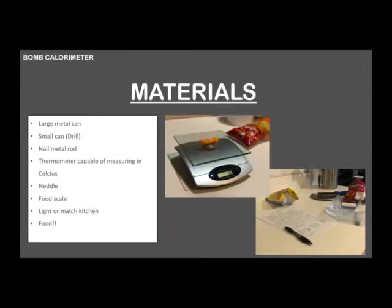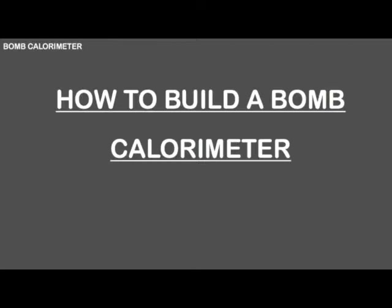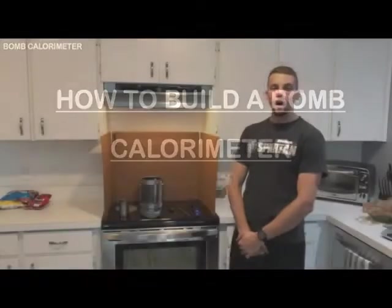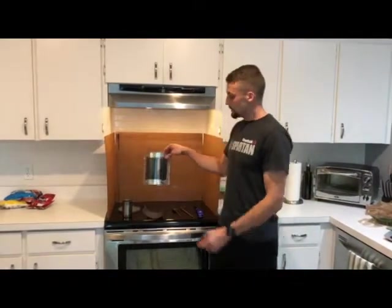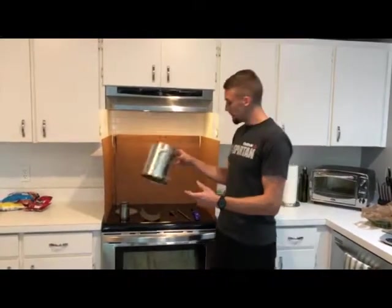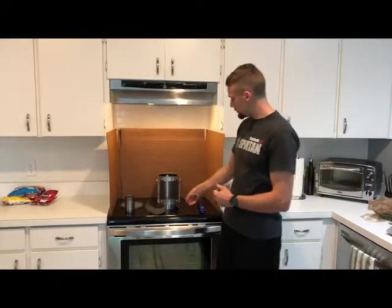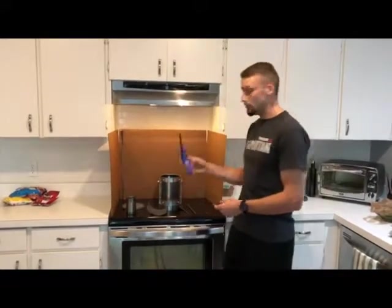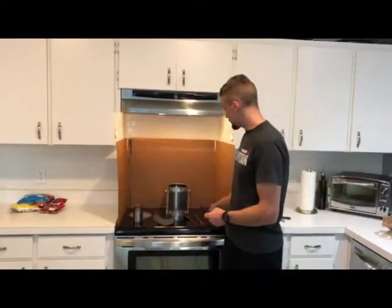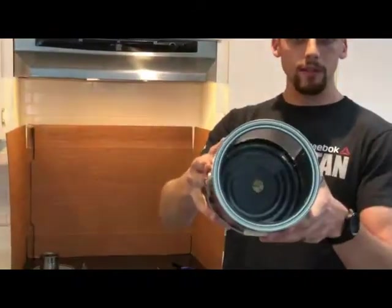Then we have some materials that we're going to be using. Hi, my name is Sean, and I'm going to show you how to build a bomb calorimeter. What you're going to need is a one gallon paint bucket, a smaller soup can, about a seven or eight inch rod, thermometer, lighting source, and cork and nails for the inside.